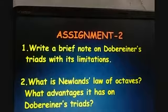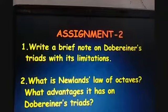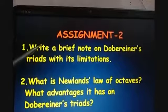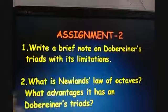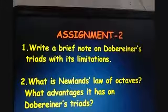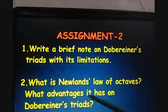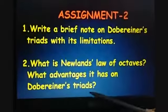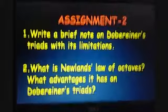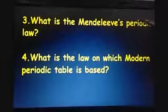Assignment number 2 is a post-test assignment having 11 questions. The first question is: write a brief note on Dobereiner's Triads with its limitations. Second question is: what is Newland's Law of Octaves and what advantages it has over Dobereiner's Triads? Question number 3 is: what is Mendeleev's periodic law?